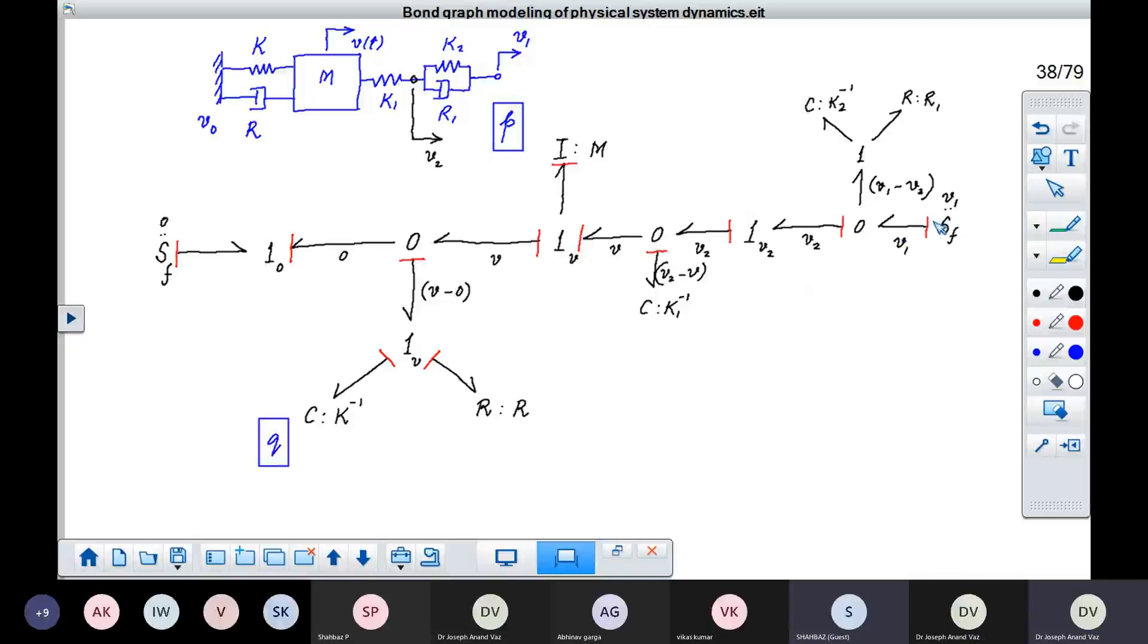And here, one bond has brought in the information of flow. One bond has brought in information of effort into the zero junction. The other bonds have to accept this flow. So we will place the causal stroke here like this. Only one bond can bring in information of effort in a zero junction.